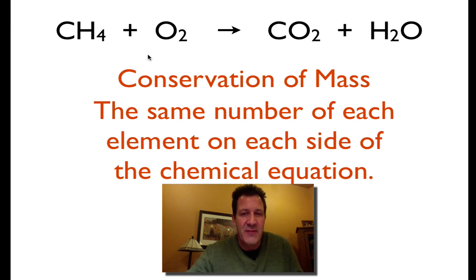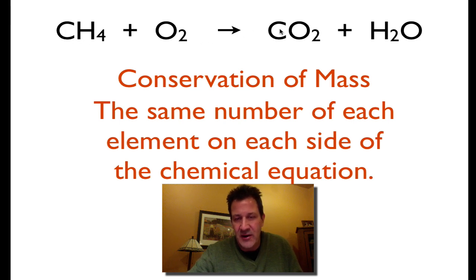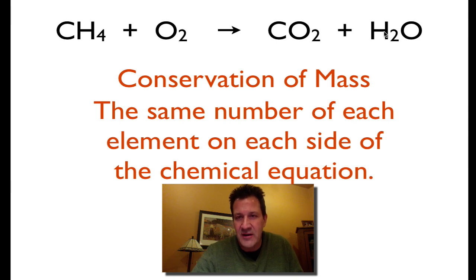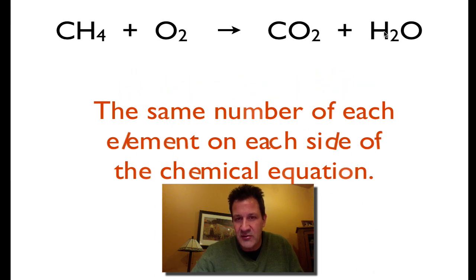This is our first chemical equation. We have methane gas, which we're going to burn in oxygen to produce carbon dioxide and water. Let's see if it's balanced already. We have one carbon on the left and one carbon on the right, so the carbons are balanced. The hydrogens — we have four hydrogens on the left, but only two on the right, so our hydrogens are not balanced, and we have to go through and balance the equation.